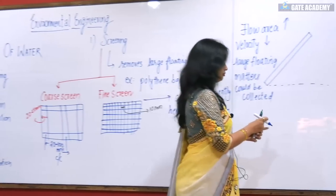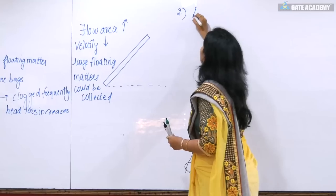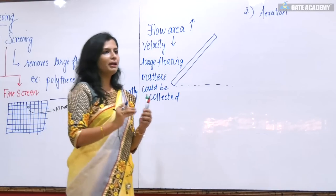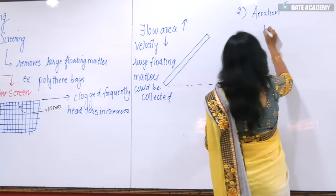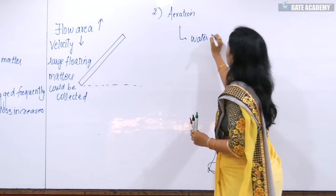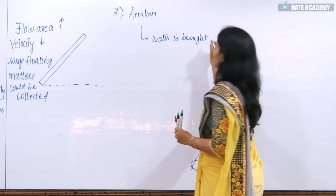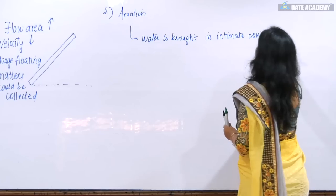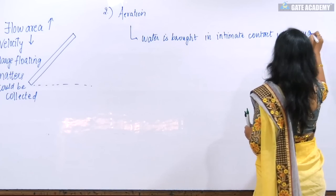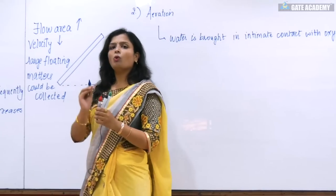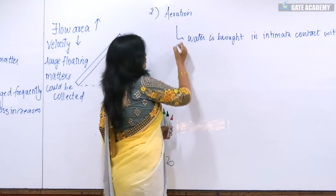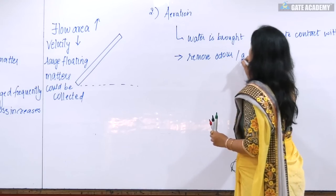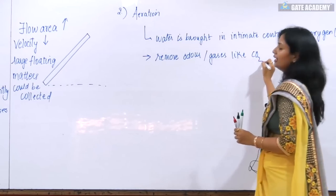Now we will move to the aeration part. The word aeration relates to the supply of air — that is supply of O2. Aeration is when water is brought into intimate contact with oxygen. That is known as aeration. What is the need to do aeration? With the help of aeration, we can remove odour, or gases like carbon dioxide and hydrogen sulphide.